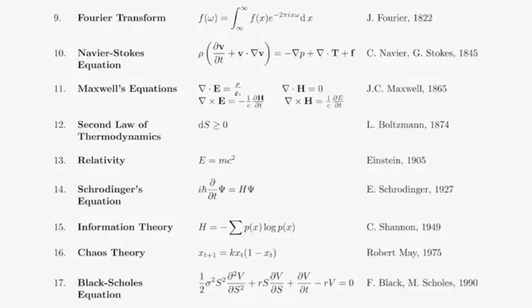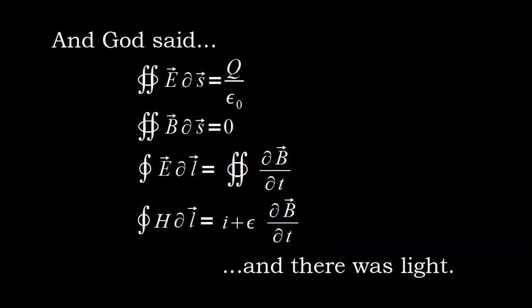Rounding out the list: Schrödinger's equation by E. Schrödinger, information theory by C. Shannon, chaos theory by Robert May, and the Black-Scholes equation by F. Black and M. Scholes. You may have seen the phrase 'And God said, let there be light, and there was light' paired with Maxwell's equations of classical electromagnetism in integral form — one way of describing light and other forms of electromagnetic radiation.